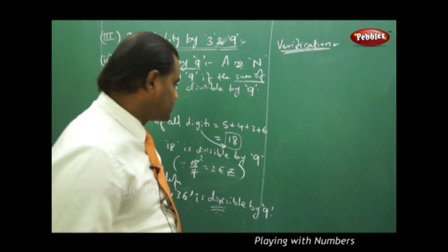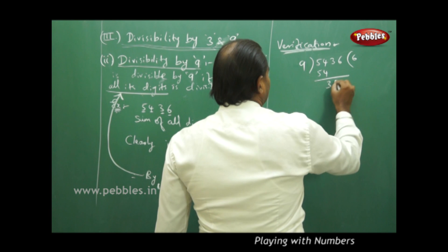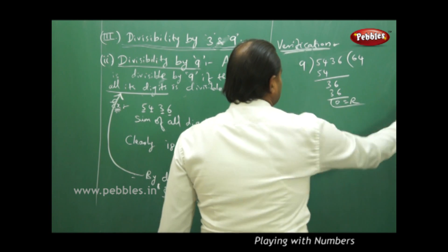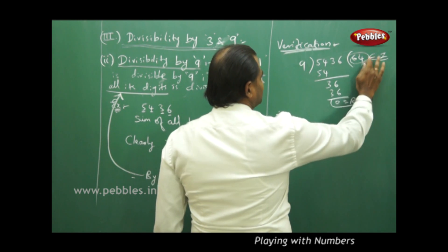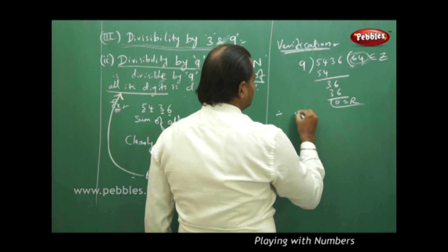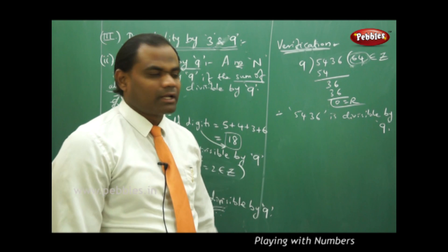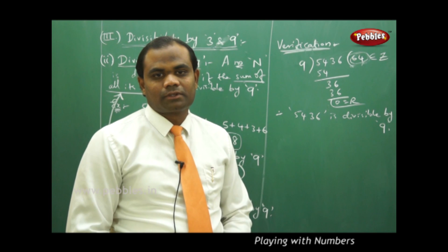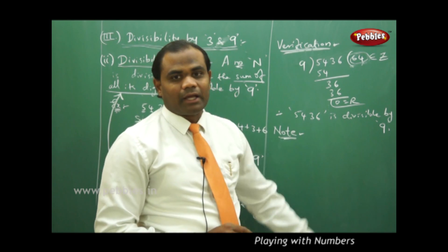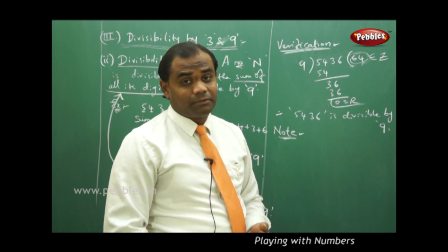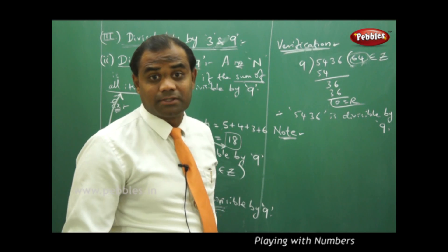Verifying divisibility by 9 manually: 9 sixes are 54, and 9 fours are 36, giving remainder 0. Therefore, 5,436 is divisible by 9. Comparing divisibility by 3 and 9: since 9 = 3 × 3, one of its factors is 3. Therefore, every number divisible by 9 is also divisible by 3. But the converse is not necessarily true.